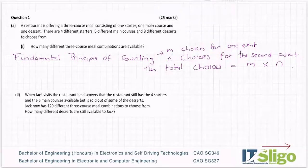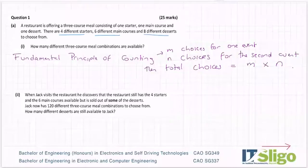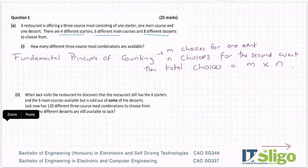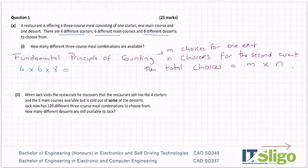Why does that matter here? You have four choices for the first event, six choices for the next event, and eight choices for the last event. Therefore your total number of meal combinations is four by six by eight. Put that into your calculator and you'll see you have 192 combinations.